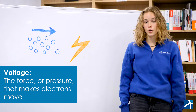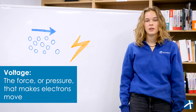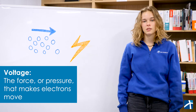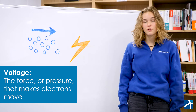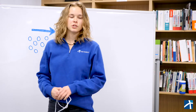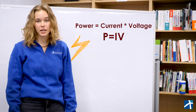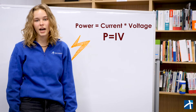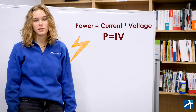Voltage is the force or pressure that makes electrons move. You can also think of voltage as the difference in charge between two points — that difference in charge is what makes the electrons want to flow to begin with. Voltage, current, and power are related with this equation: if we want to have the same power with a smaller current, we'll need a higher voltage. Conversely, a bigger current will need a lower voltage.